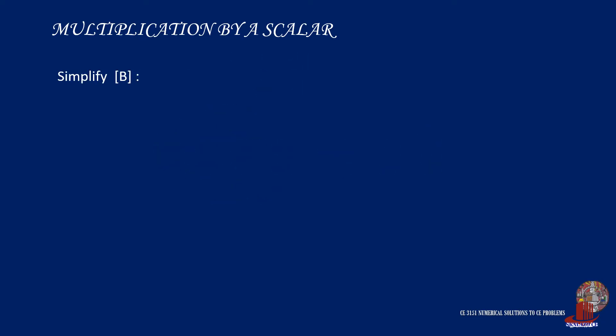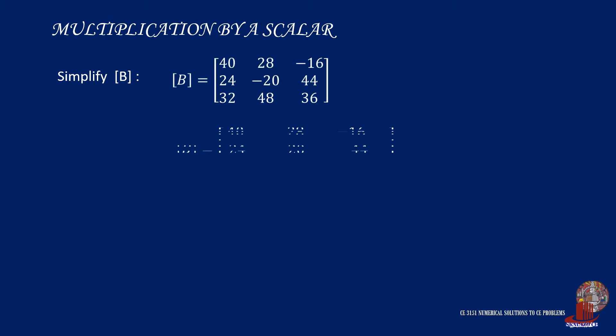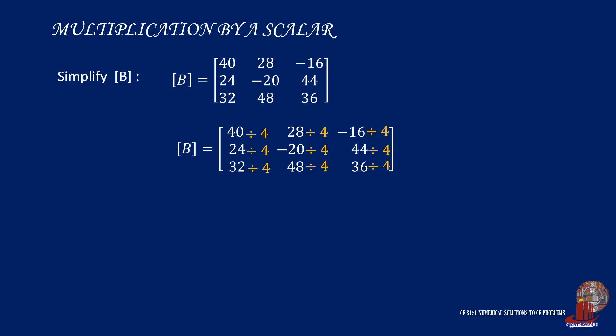In case we simplify matrix P, where the entries are as given, by checking all the elements they are multiples of 4, so we can extract that constant, simplifying the matrix as 4 multiplied by the simplified matrix having values 10, 7, and negative 4 for the first row, 6, negative 5, and 11 for the second, and 8, 12, and 9 for the third row.